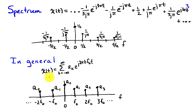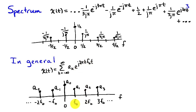For a general signal x of t, the Fourier series has all terms from minus infinity to infinity of a_k times e to the j 2 pi k f-naught t. These complex sinusoids have frequencies k f-naught hertz, so at multiples of f-naught in the spectrum we have a complex amplitude a_k, as sketched here.